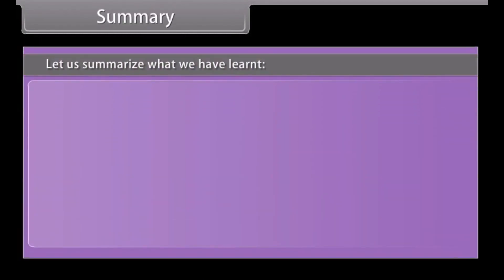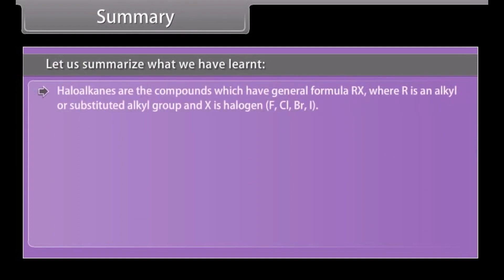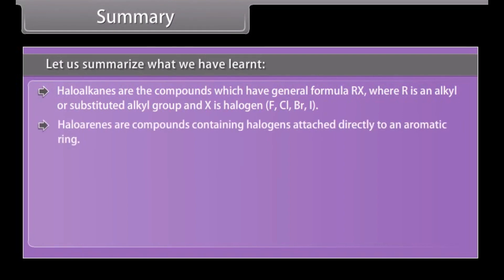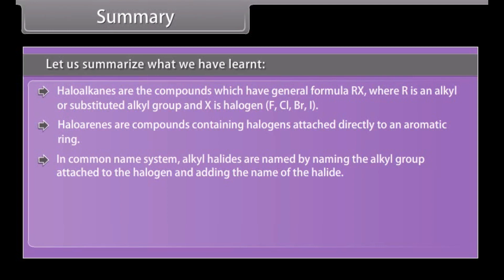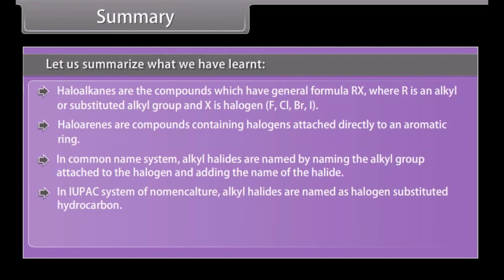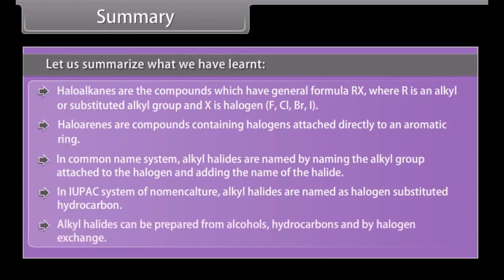Summary: Haloalkanes are compounds with the general formula RX, where R is an alkyl or substituted alkyl group and X is a halogen — F, Cl, Br, or I. Haloarenes are compounds containing halogens attached directly to an aromatic ring. In the common name system, alkyl halides are named by naming the alkyl group attached to the halogen and adding the name of the halide. In the IUPAC system, alkyl halides are named as halogen-substituted hydrocarbons. Alkyl halides can be prepared from alcohols, hydrocarbons, and by halogen exchange.